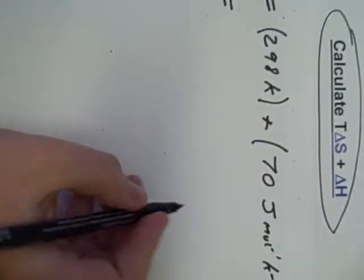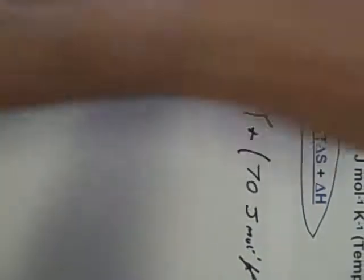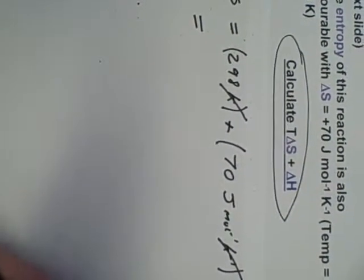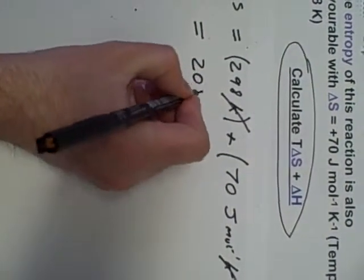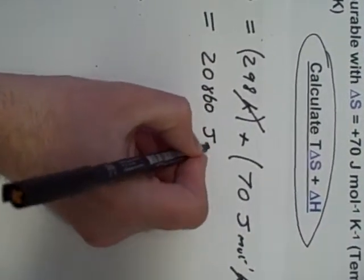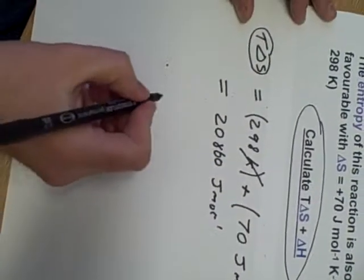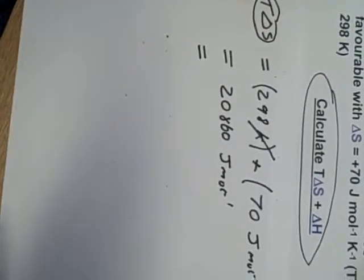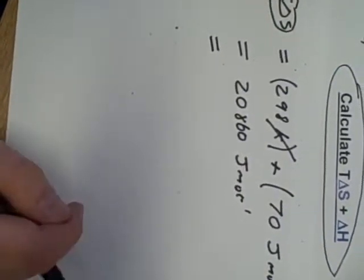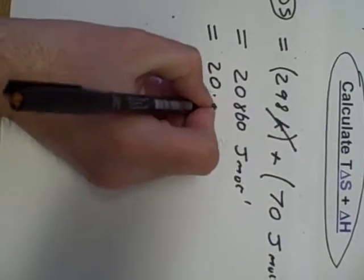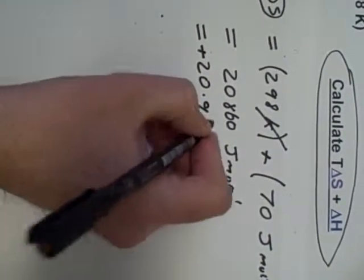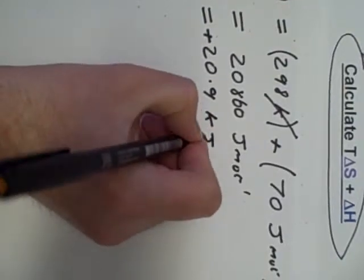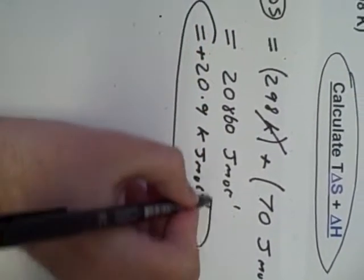And guess what happened to the Kelvin terms? Multiplied through. So with my calculator, 298 times 70 gives me an answer of 20,860 joules per mole. The ideal unit for T delta S actually is kilojoules per mole. So I divide by 1,000 and to one decimal place, that's going to be quite important, plus 20.9 kilojoules per mole. So there's T delta S sorted.